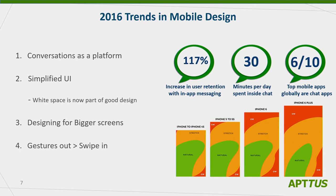Here are some trends happening right now in design. Six of the top ten mobile apps are chat or conversational apps. You can get very high retention numbers with chat enabled in your app. If you're not using Salesforce One, think about how you'll integrate some kind of messaging and chat to increase retention. Keeping it as simple as possible — whitespace is the new Mona Lisa. Your main call to action should be clear and evident up front, with maybe one or two others. For enterprise apps with many steps, this will be a challenge.